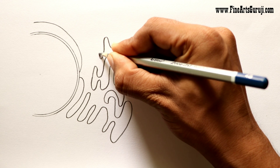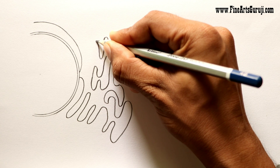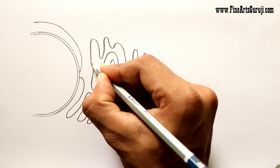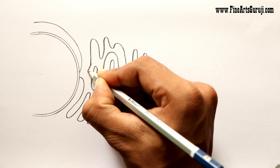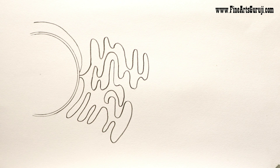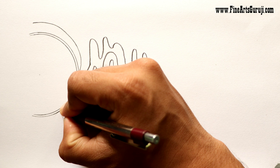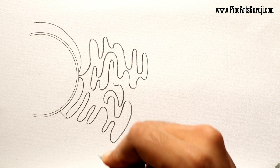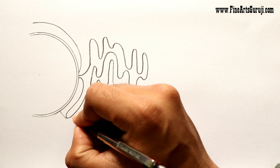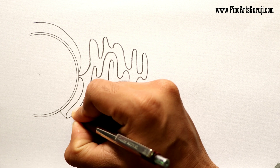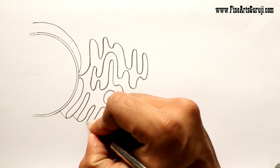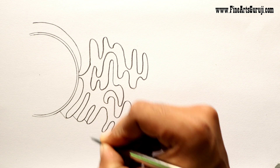Now you have to join it from here to the middle of these two lines which we have drawn on the circumference. Again, I will use my mechanical pencil and join this line from here — you can see clearly how I made it. You have to draw it like this. Then we will complete this whole endoplasmic reticulum diagram.